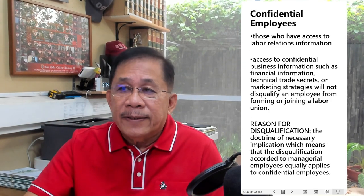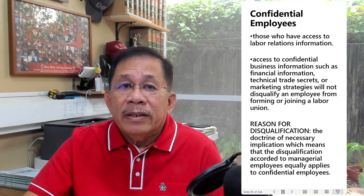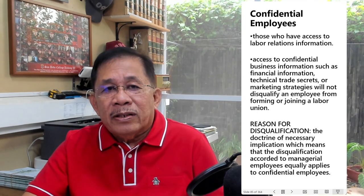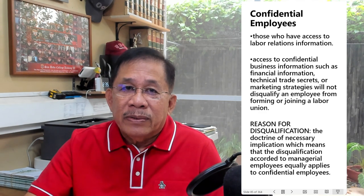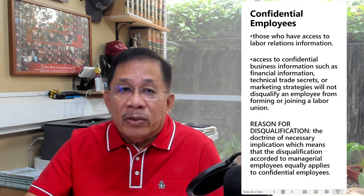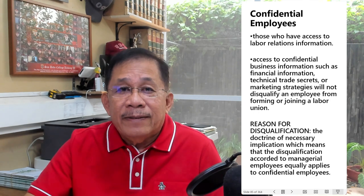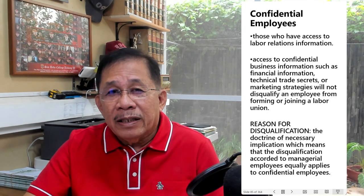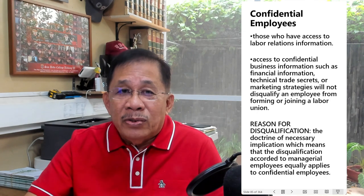The second disqualification refers to confidential employees. For purposes of disqualification, confidential employees are those who formulate, determine, and effectuate management policies in the field of labor relations. Therefore, the confidential relationship must pertain to matters relating to labor relations. Not all confidential employees are disqualified — only those who have access to labor relations information. Employees who have access to information confidential from a business standpoint, like financial information, trade secrets, or marketing strategies, are not disqualified.